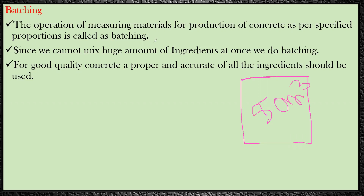The batching plant we have has a very limited mixer capacity — usually it can produce only one or at most two cubic meters of concrete at once. So if we require 50 cubic meters and the capacity of the mixer is only two cubic meters, that means we need to do batching 25 times to get 50 cubic meters of concrete.